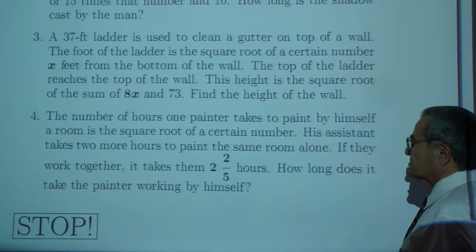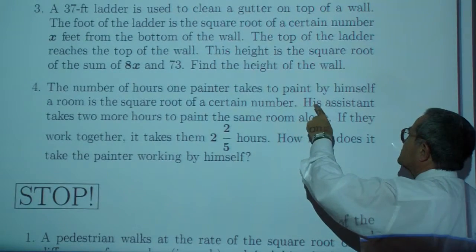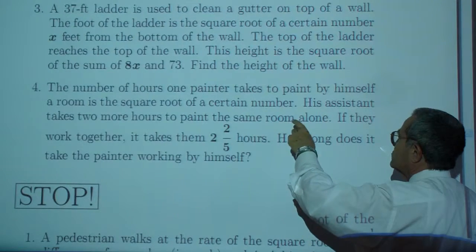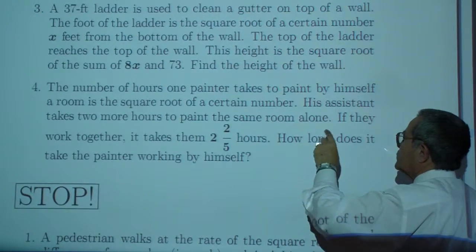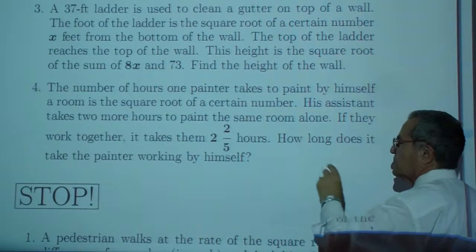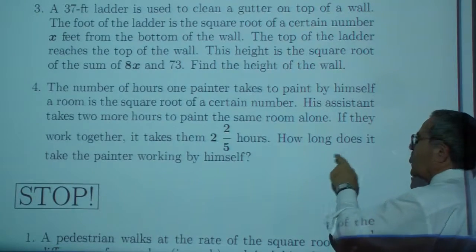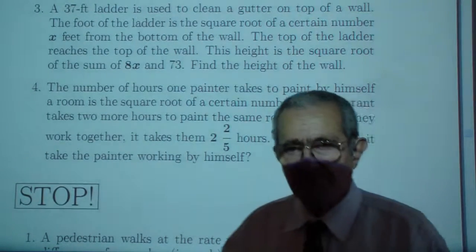And then exercise four. The number of hours one painter takes to paint by himself a room is the square root of a certain number. His assistant takes two more hours to paint the same room alone. If they work together, it takes them two and two-fifth hours. How long does it take the painter working by himself?